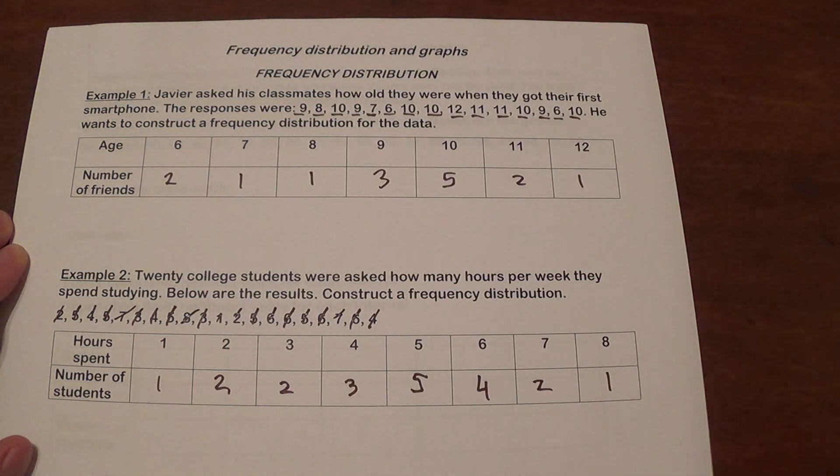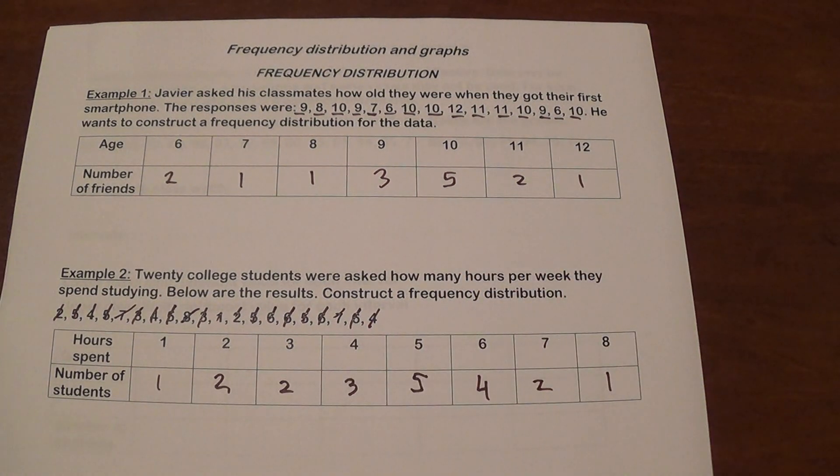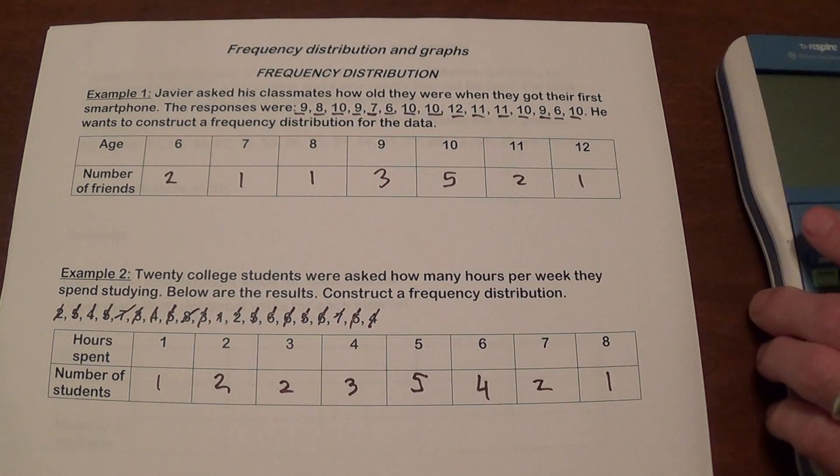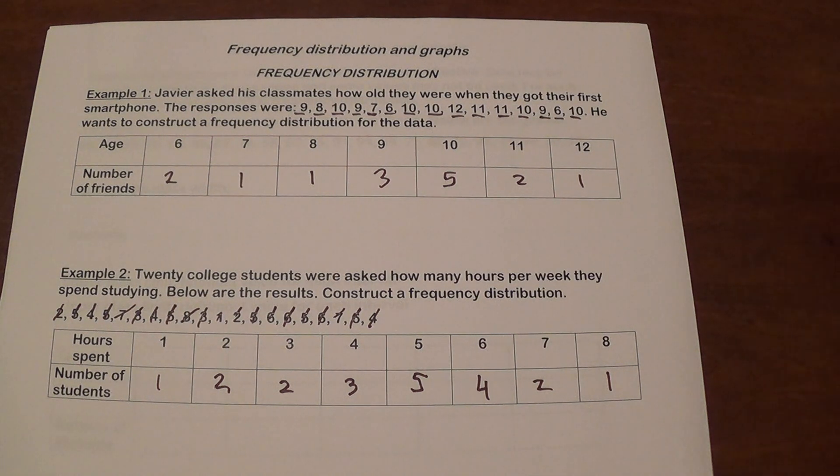Now one thing that I always recommend that you do is you want to make sure that you add all these numbers together because that needs to add up to 20. Right? Because that's what we had in the beginning. So everything we have reason to think everything's good.